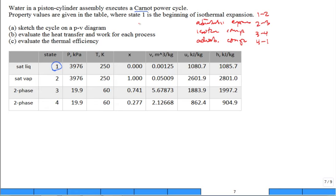Now, the property values are given: state one, state two, state three, state four. You have the pressure, the temperature (that's in degree C, not Kelvin), the quality, the specific volume, the internal energy, and the enthalpy.